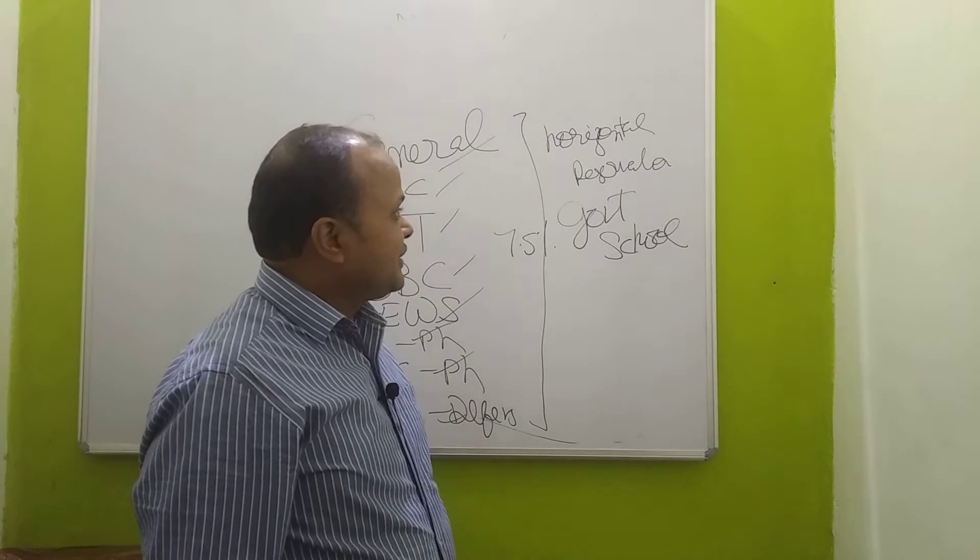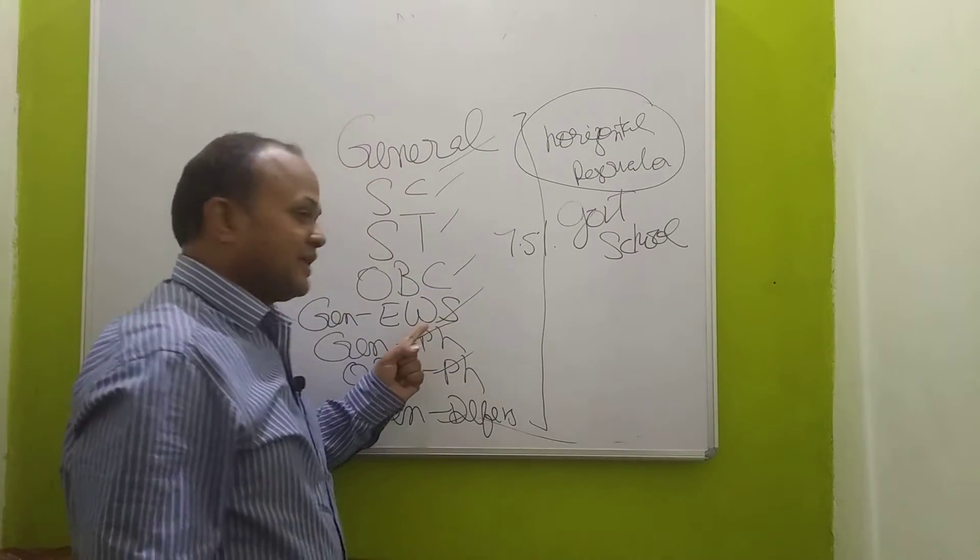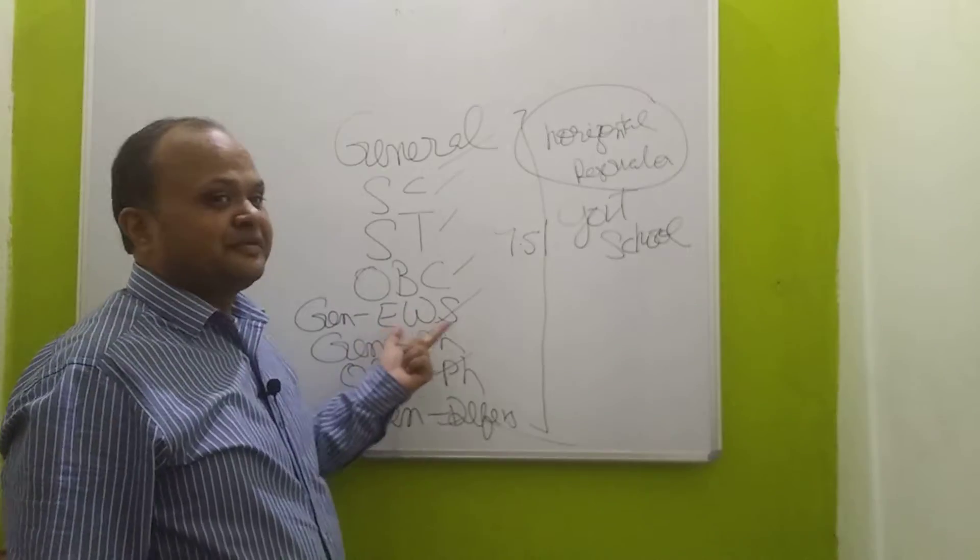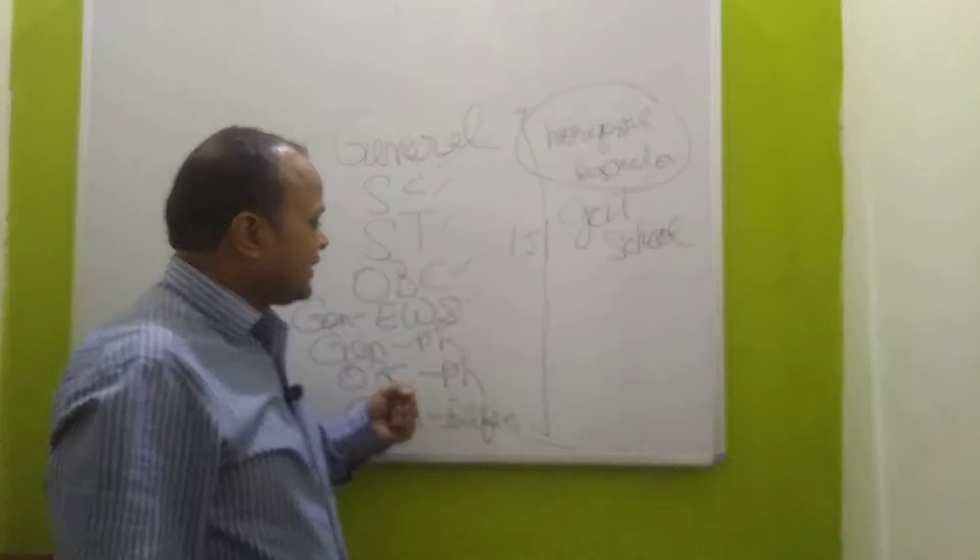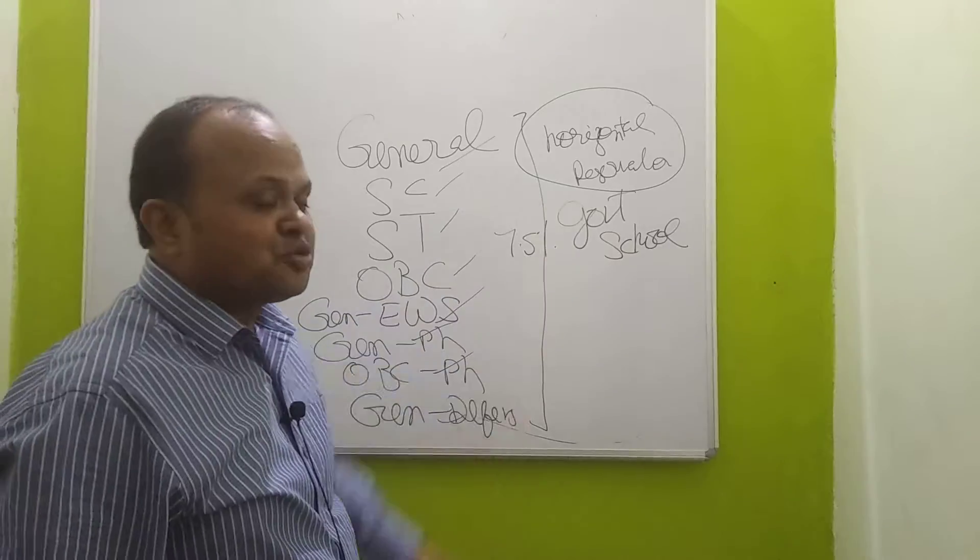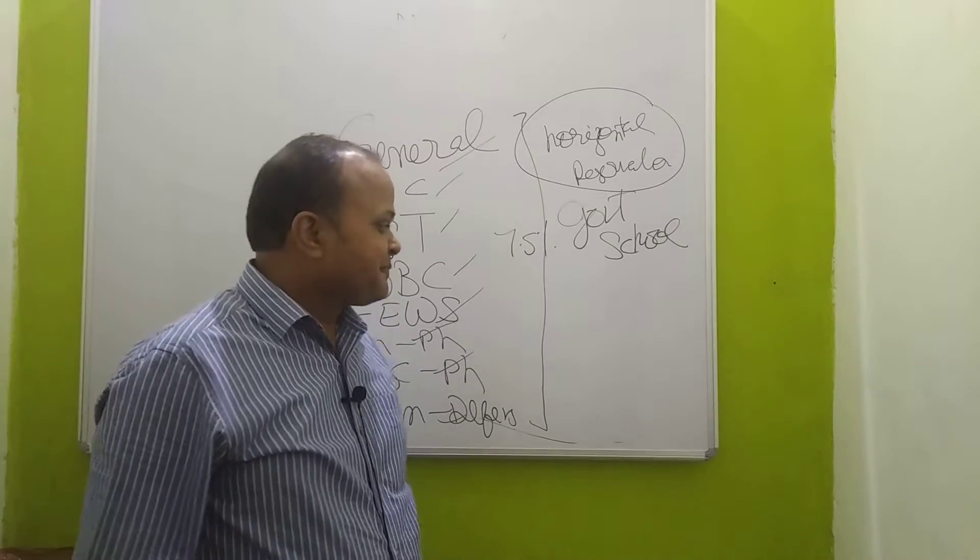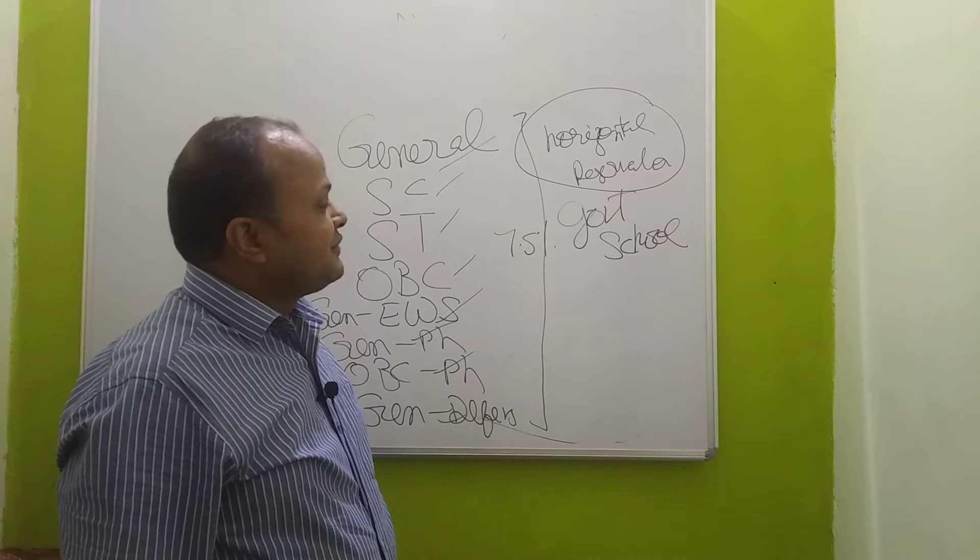This is a new world called horizontal reservation. When EWS was brought in, the purpose was for economic weaker sections whose annual family income is less than 8 lakhs. But it's not true that all these children are from government schools.